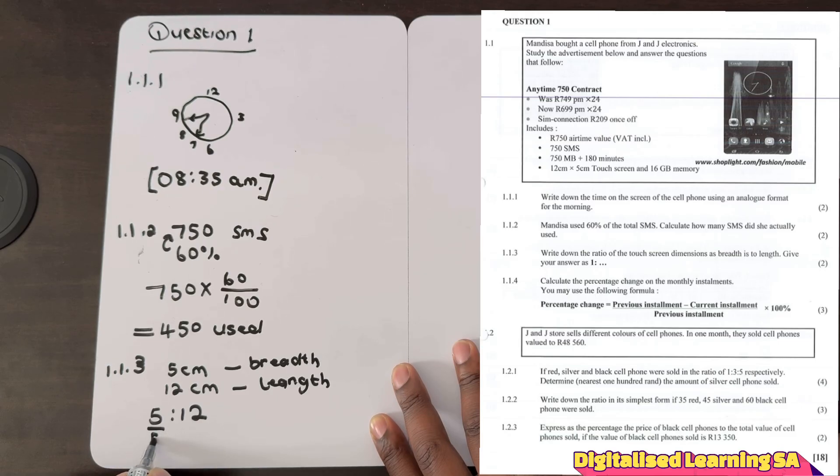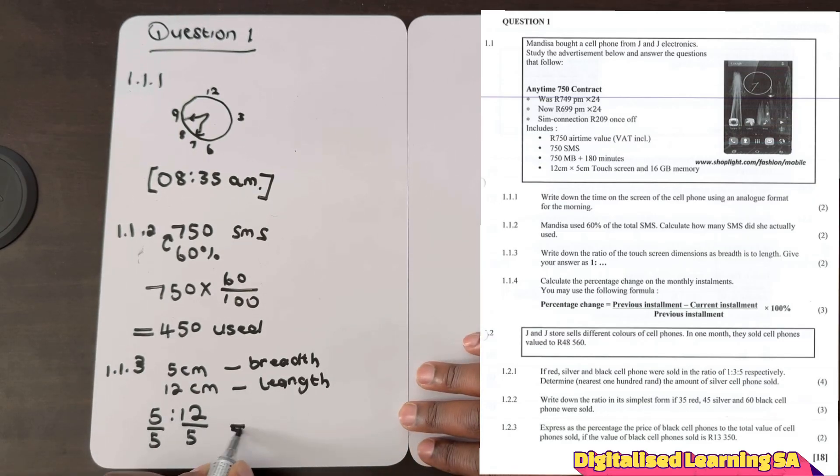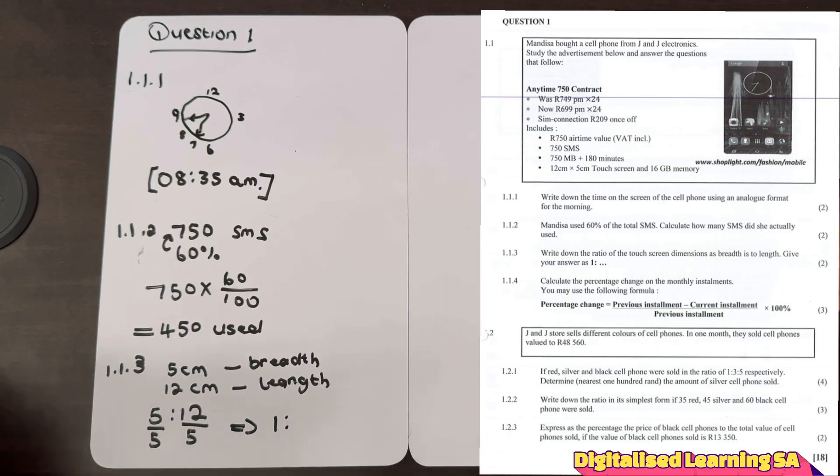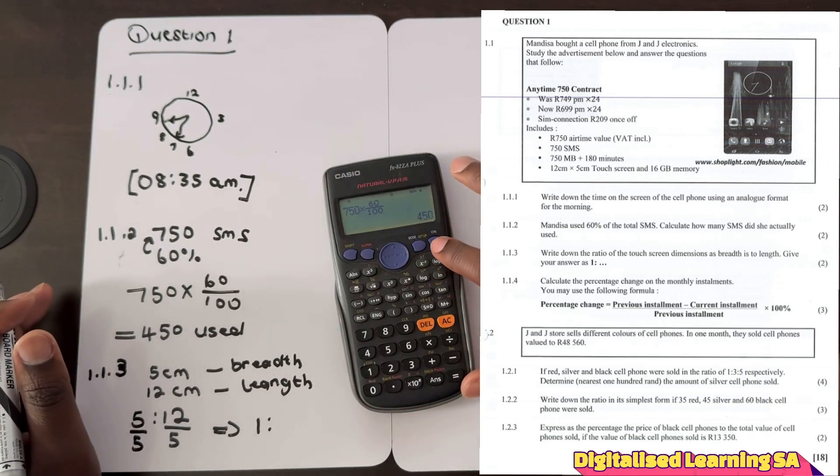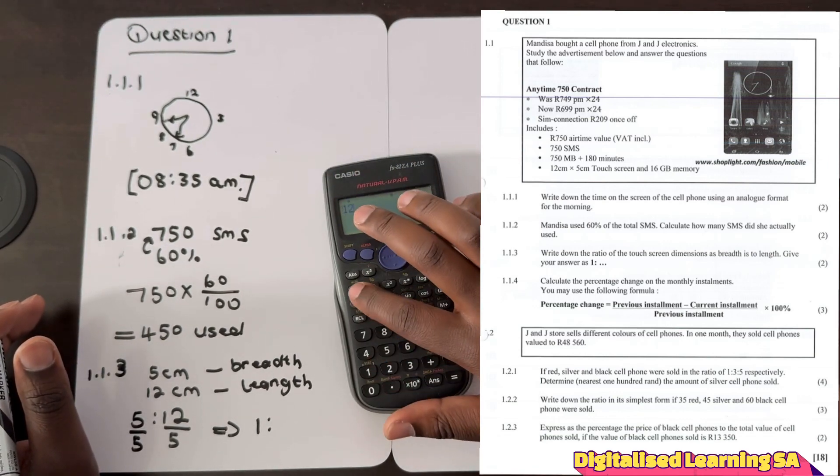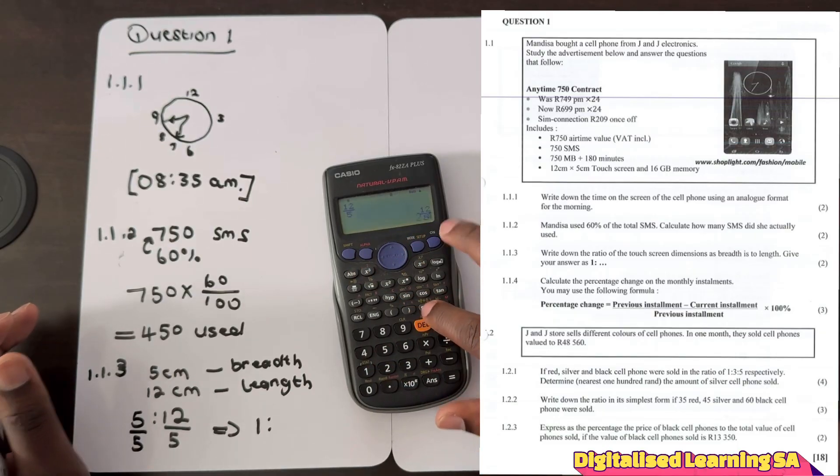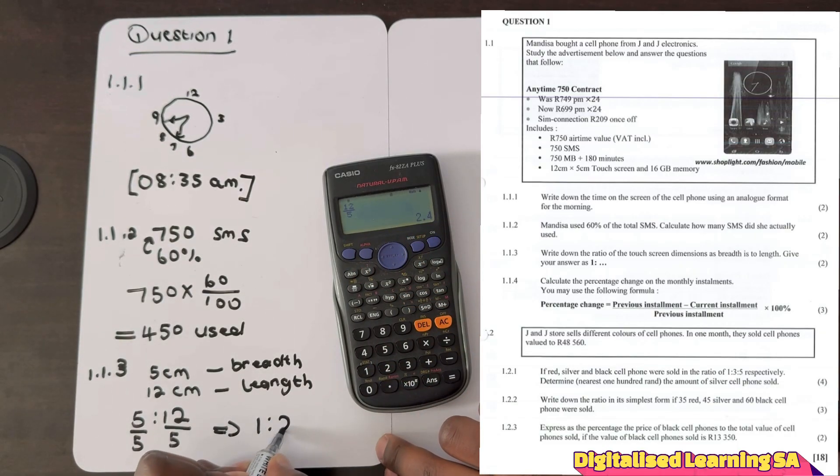And if we divide by 5, we get 1. And if we divide 12 by 5, we get 2.4. So this is our ratio.